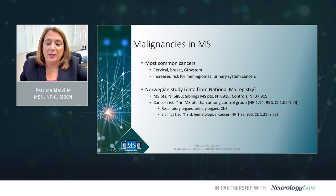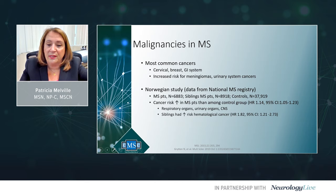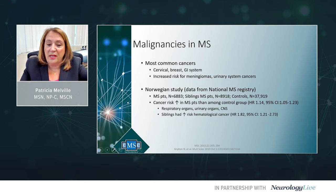A recently published study from Norway looked at data from their national MS registry — about 6,800 MS patients, 8,900 siblings of MS patients, and a control group of 37,000. They found that cancer risk is increased in MS patients compared to the control group. The majority of cancers involved the respiratory organs, urinary organs, and central nervous system. Interestingly, siblings of MS patients had an increased risk for hematological cancer.